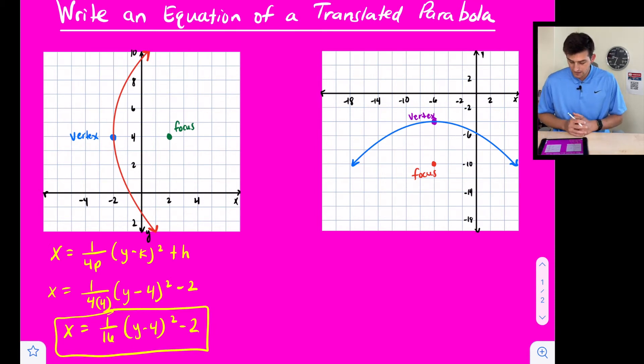For our second example, we have a parabola that opens down, so we know our equation should start with Y equals. We have Y equals 1 over 4P, and this time we're going to have X minus H quantity squared and then plus K. This example would probably be our standard or normal equation where we have Y equals, like for a parabola that is a function. X minus H squared and then plus K is how we would write that.